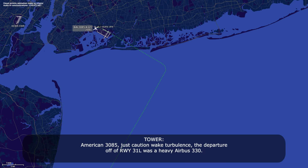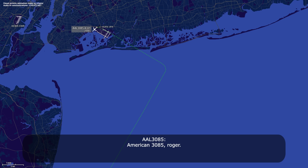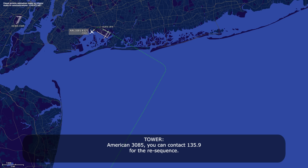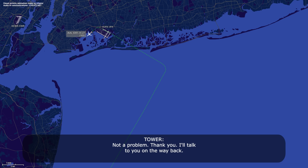American 385, caution turbulence — departure off runway 31 Left was a heavy Airbus 330. American 385, roger. American 385, contact 135.9 for the re-sequence. 135.9, American 385. Before you go — just the reason for the miss? Unstable — we just got caught in the wind in the flare. Not a problem, thank you. I'll talk to you on the way back.